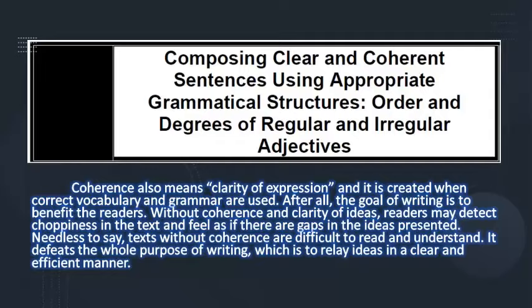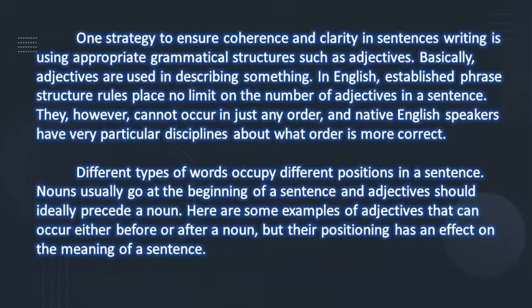One strategy to ensure coherence and clarity in sentence writing is using appropriate grammatical structures such as adjectives. Basically, adjectives are used in describing something. In English, established phrase structure rules place no limit on the number of adjectives in a sentence; however, they cannot occur in just any order, and native English speakers have very particular disciplines about what order is more correct. Different types of words occupy different positions in a sentence. Nouns usually go at the beginning, and adjectives should ideally precede a noun. Here are some examples of adjectives that can occur either before or after a noun, but their positioning has an effect on the meaning of a sentence.